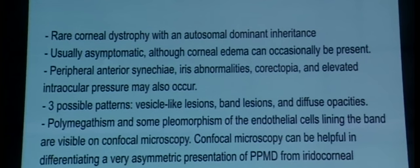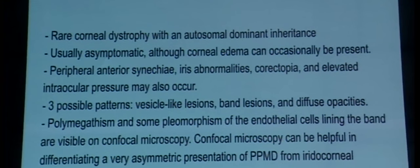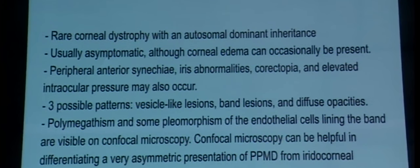Posterior polymorphous corneal dystrophy is also a rare corneal dystrophy with autosomal dominant inheritance. It is usually asymptomatic and corneal edema may not be present in all cases. Patients can also present with peripheral anterior synechiae, iris abnormalities, corectopia, elevated IOP, and it can be confused with ICE syndrome. The three patterns of presentation are vesicle-like lesions, band lesions, and diffuse opacities. Polymegethism and pleomorphism of endothelial cells, especially lining the band, are seen on confocal microscopy.